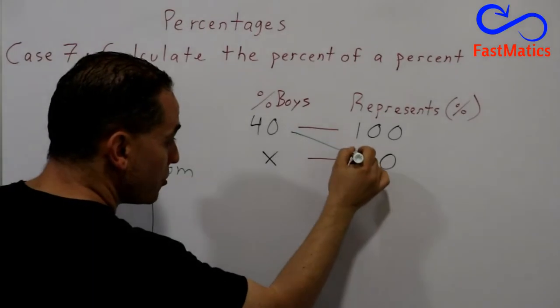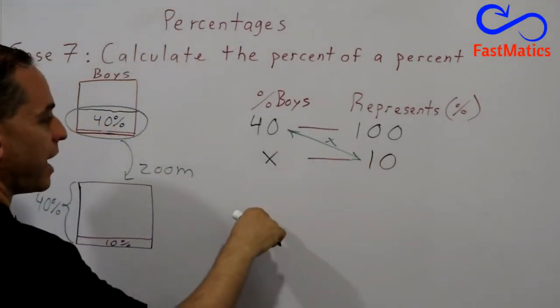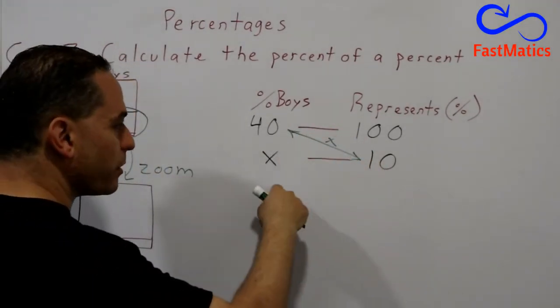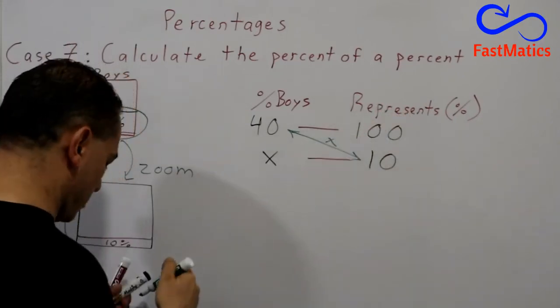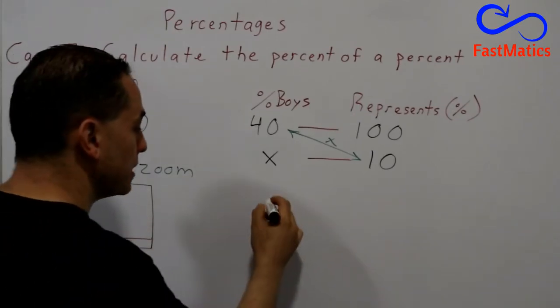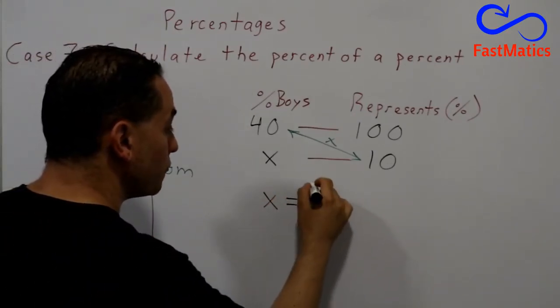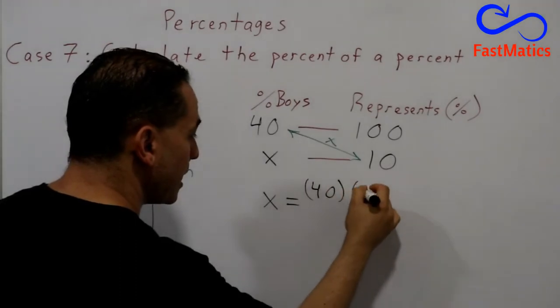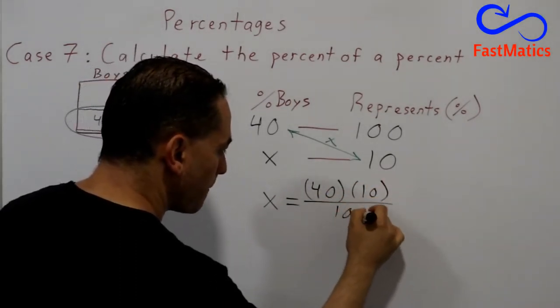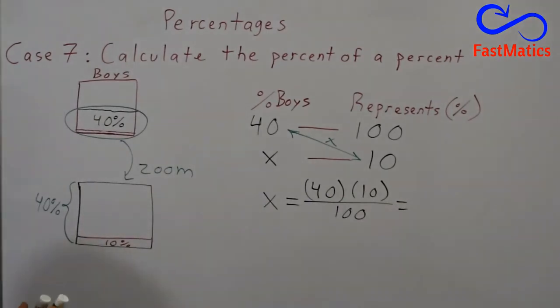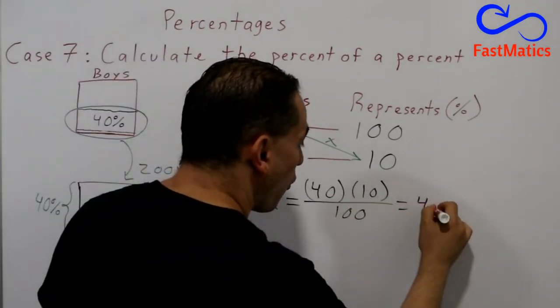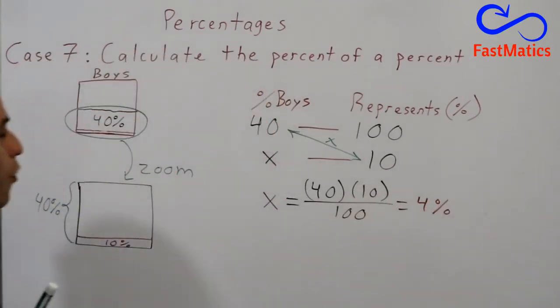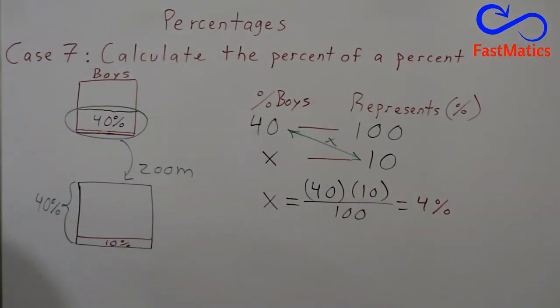Remember that the rule of three can be solved by multiplying the numbers that have a couple in diagonal, and the answer will be divided by the number that doesn't have a couple in diagonal. Then we're gonna write x is equal to 40 times 10 divided by 100, and the answer is 4%. Only 4%. That means that for every 100 boys at Union Middle School, 4 boys are sixth graders.